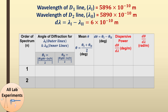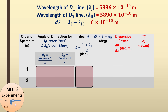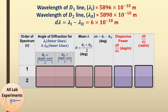Now let's make a table for this part of the experiment. Like before, we find the angle of deviation for both λ₁ and λ₂. After that, calculate their mean: (θ₁ + θ₂)/2. The dθ quantity can then be calculated. Finally, the dispersive power is dθ/dλ. This gives the quantity in degrees per meter, and we can convert it to radians per meter. In this way we find the dispersive power for first order and second order spectra.